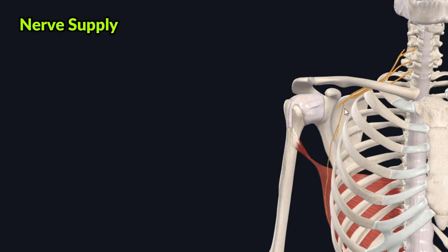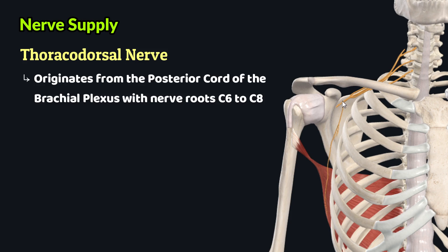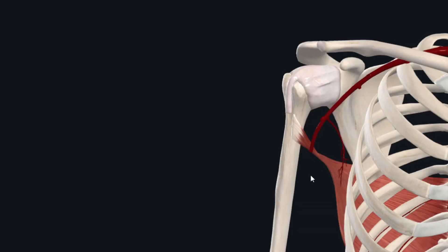Now let's discuss the nerve supply of the latissimus dorsi muscle. This muscle is supplied by the thoracodorsal nerve, which originates from the posterior cord of the brachial plexus with nerve roots C6, C7, and C8.